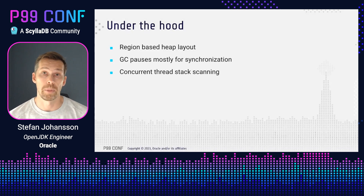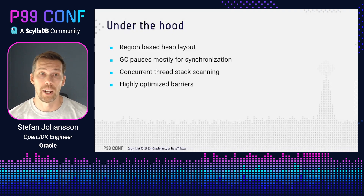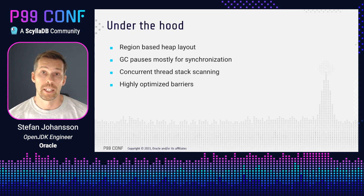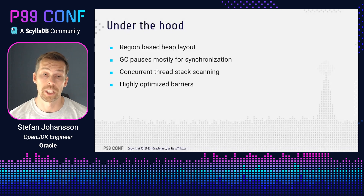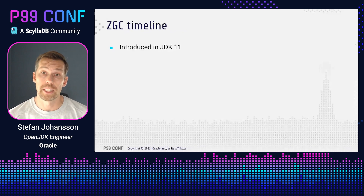This is also very good from a scalability point of view because the number of application threads doesn't really affect the pause times. To get good performance it's also very important to have highly optimized barriers. Barriers from a GC point of view is the code that is executed every time the Java application accesses an object in the heap. For example, ZGC has read barriers that are executed whenever a Java application tries to read an object — they determine whether this object can be read straight away or if there is any GC work that needs to be done before the object can be read safely. This is a key part of being able to do most of the heavy GC work concurrently with the Java application still running.